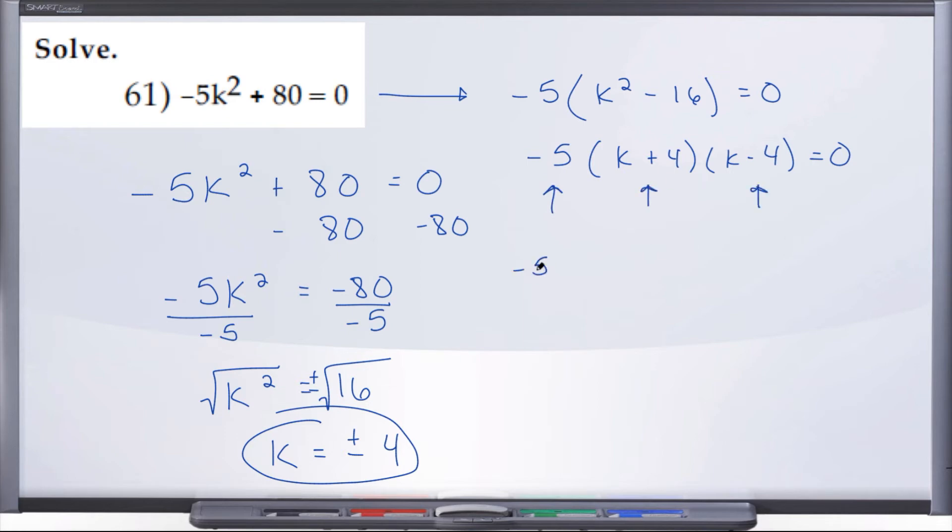So negative 5 equals 0, k plus 4 equals 0, k minus 4 equals 0. Here, negative 5 equals 0, is that a true statement? No, so we drop that.